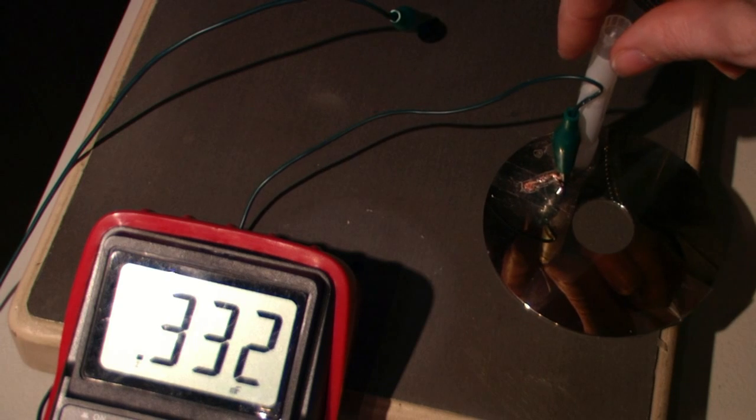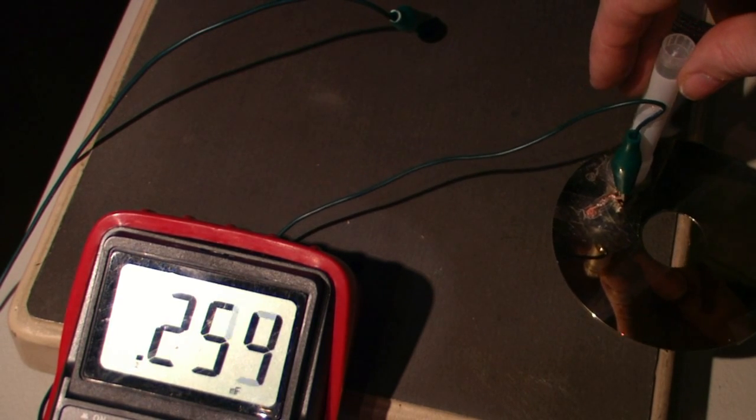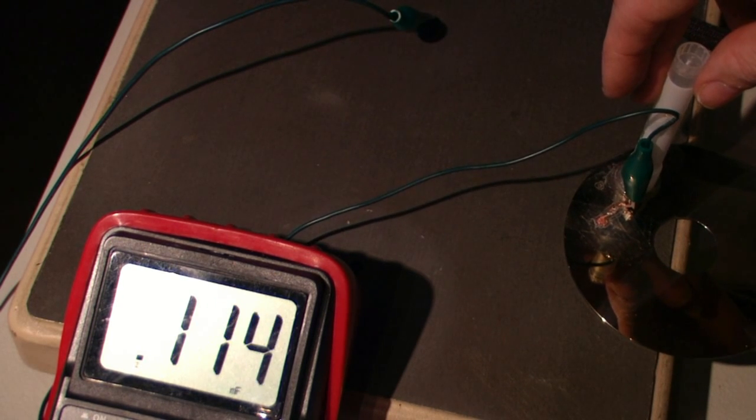The overlapping surface also plays a role in the farad rating. You can see the value goes down when I slide the upper electrode so there's less overlap. This technique is commonly used in variable capacitors.